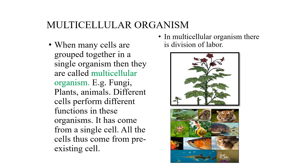You can see in the diagram — there is a plant, and also many animals shown: tiger, lion, monkey, fish, and snail. All these are multicellular. They have many cells, but all cells came from a single cell. All cells thus come from a pre-existing cell.